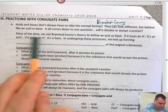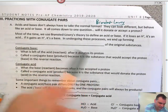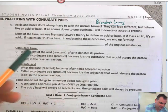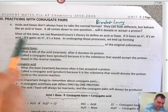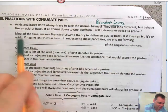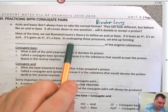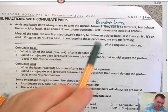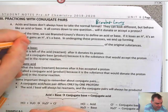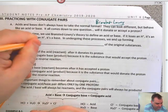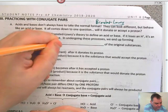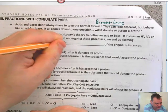Most of the time when we use Brønsted-Lowry theory, it's acid-base: if it loses an H⁺, it's an acid; if it gains an H⁺, it's a base. Undergoing this process, we end up forming conjugate pairs.